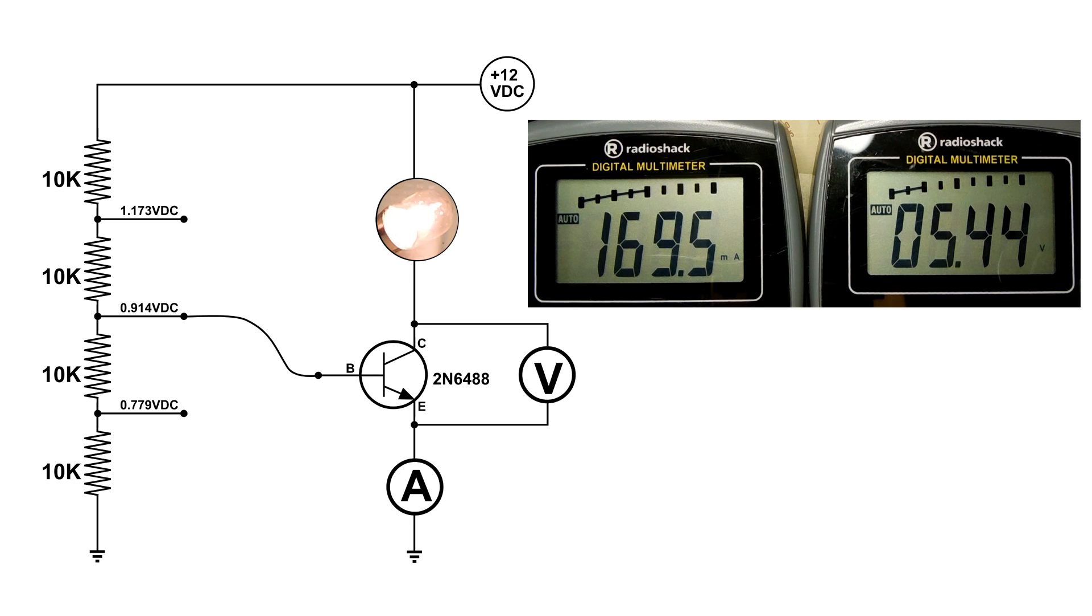Now I have put the bias on the center connection, the 0.914, and now you can see on the meters that the current has gone up to 169.5 milliamps and our voltage has dropped to 5.44 volts. So that means that the resistance between E and C has had to decrease and using Ohm's law R equals V divided by I, R is now 32.1 ohms.